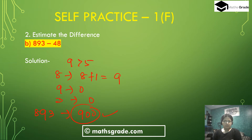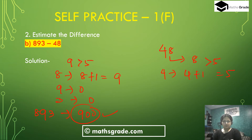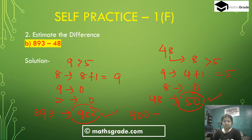Now 48 is a two-digit number, so round 48 to the nearest 10. The units digit is 8, and 8 is more than 5, so add 1 to the tens place digit. 4 changes to 5, and the units digit 8 changes to 0. So 48 rounded to the nearest 10 is 50. Therefore, 893 rounded to 900 minus 48 rounded to 50 gives 900 minus 50, which is 850. So 850 is the answer.